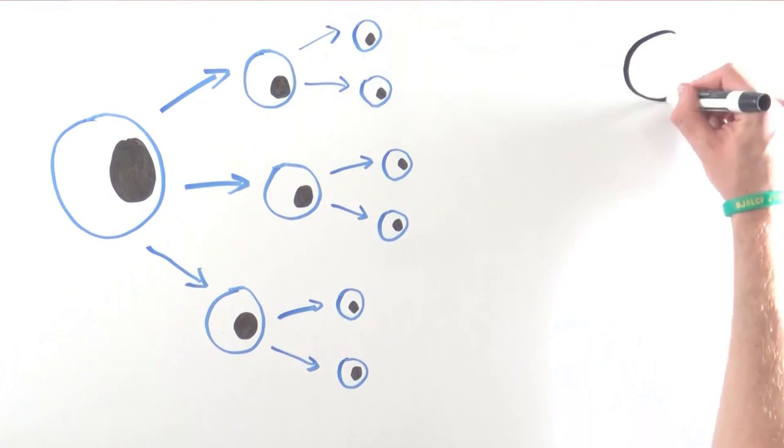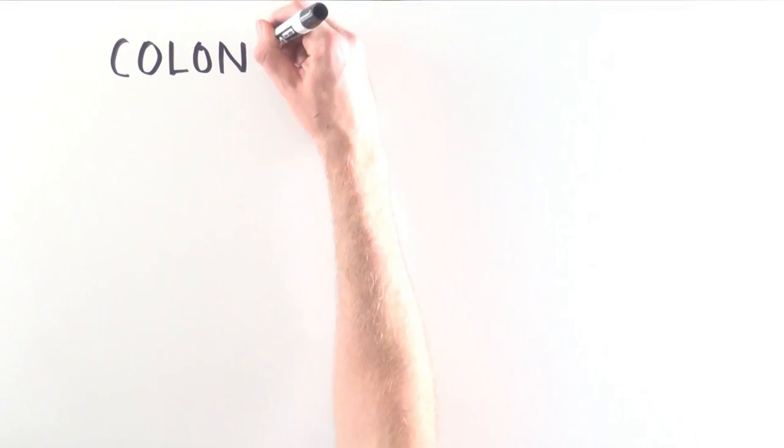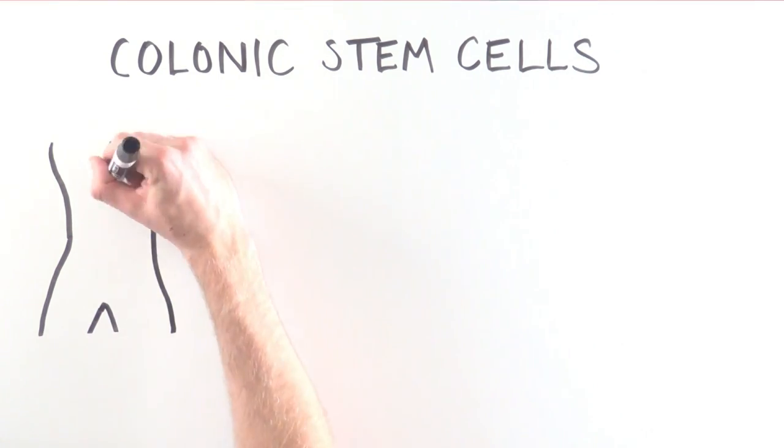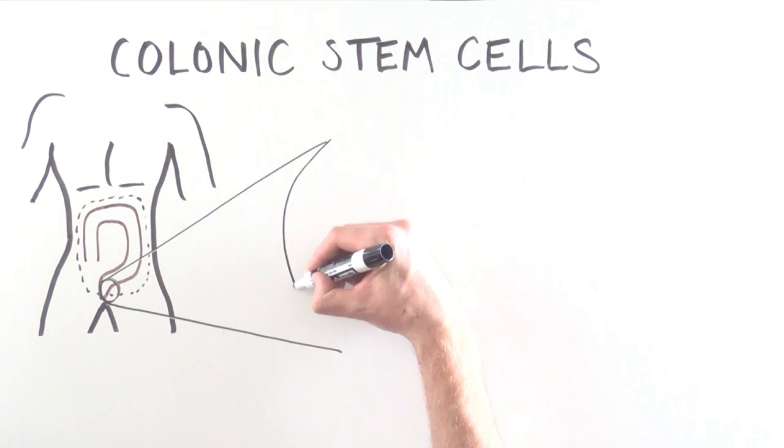Stem cells produce all of the tissues in our bodies. When we are born, specialized stem cells maintain the health of specific tissues. For example, our colon has specialized stem cells that keep our colon healthy by continuously renewing the tissue. They do this in a very elegant way.